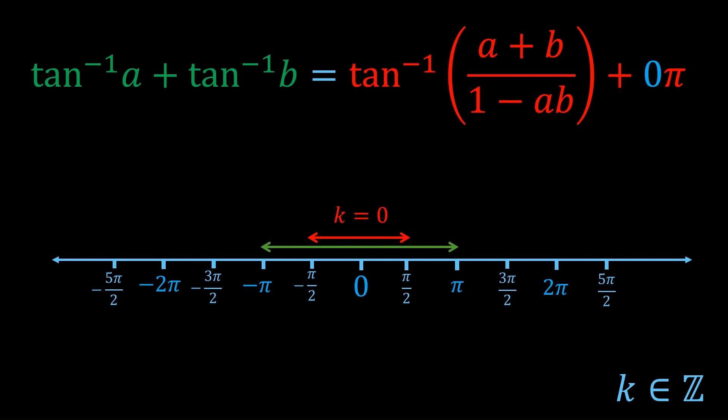How about k equals 1? Well, that would just mean we're adding π to this right hand side. So that would mean shifting the red range right towards by π. That would look something like this. Notice that this k equals 1 red arrow still overlaps with the green arrow. So it's possible for there to be equality.